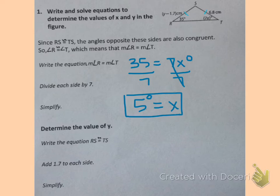which means their measurements equal each other. So that means the one side, Y minus 1.7, is equal to the other side with the tick mark, 6.8.